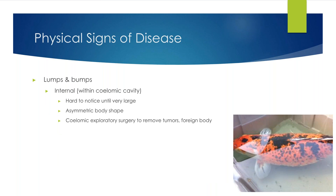Like any other animal, fish can get lumps and bumps. If they are internal within the salomic cavity — fish don't have an abdomen and a thorax, they have a coelom — it can be very hard to notice lumps internally until they are very large. Mostly we'll notice fish with an asymmetric body shape. The best way to evaluate what's going on is with an ultrasound. We have a portable ultrasound that hooks up to a tablet, making it easy to determine whether a fish has an asymmetric ovary, is full of fluid from a cyst that can be drained, or unfortunately has a tumor.